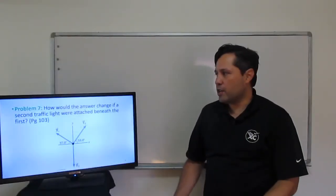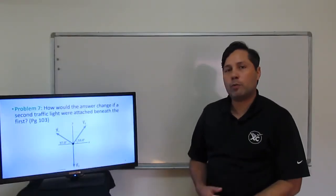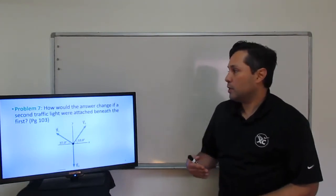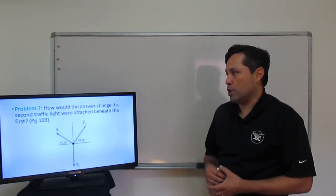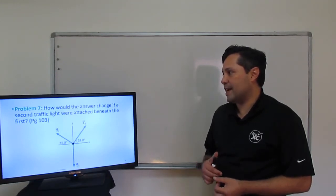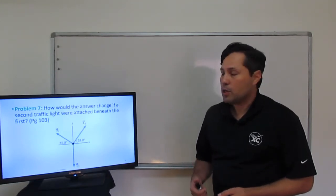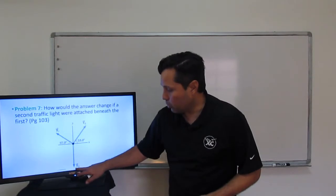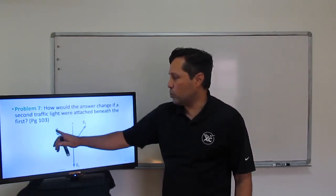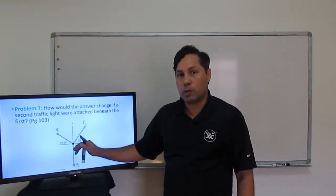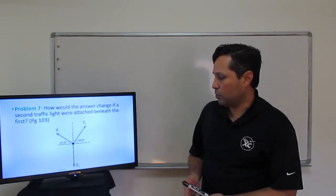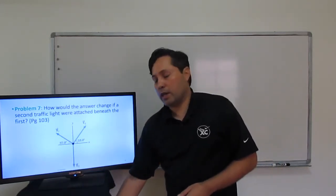Problem number 7 asks a follow-up about the traffic light: how would the answers change if a second traffic light were attached beneath the first? If we double T3, that would double T1 as well as double T2.